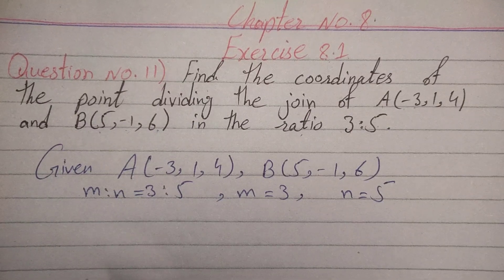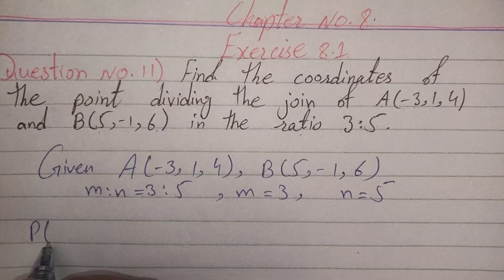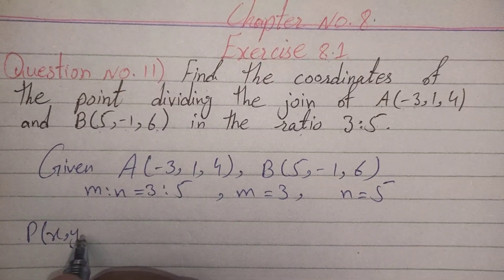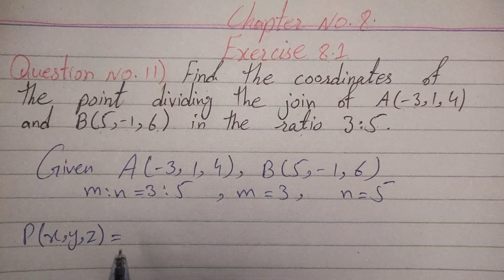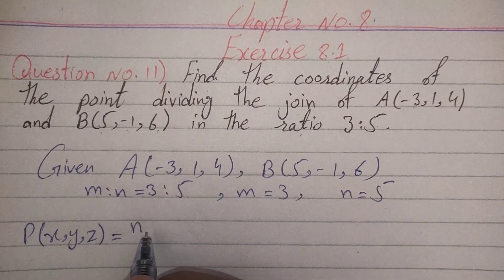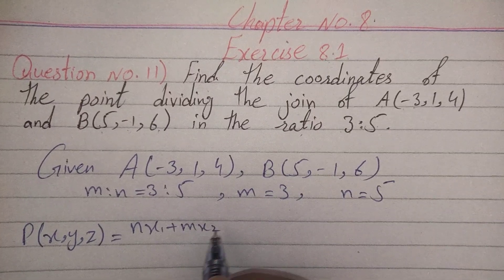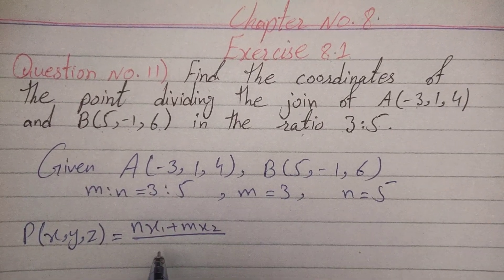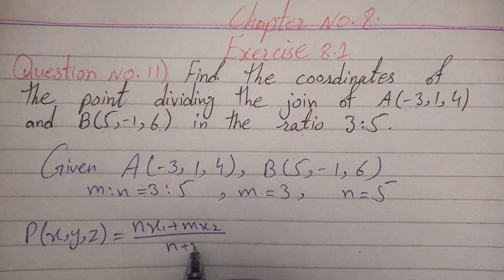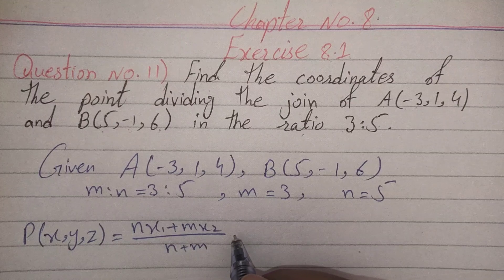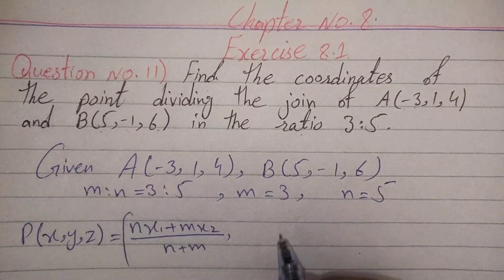The coordinate ratio formula is: P(x, y, z) equals (nx₁ + mx₂) over (m + n).